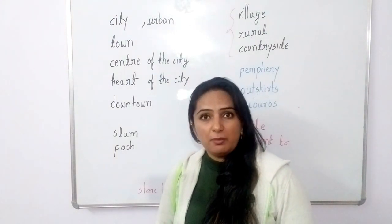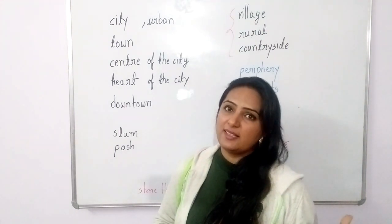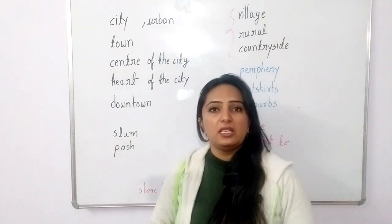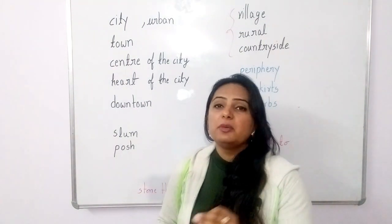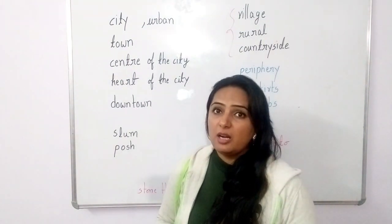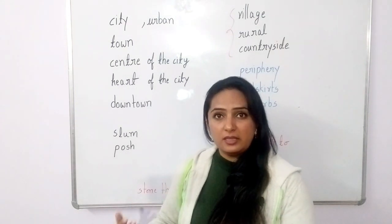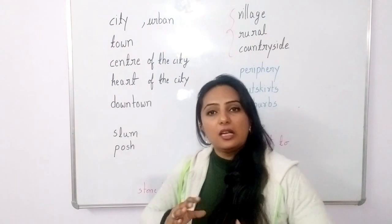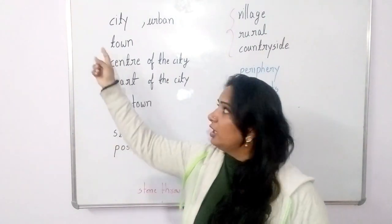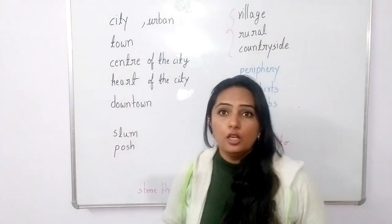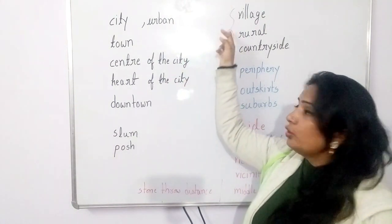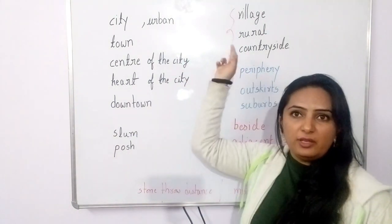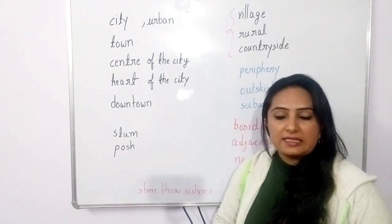You will tell that it is situated in the city or in a village. If it is a city, then you can use the words: city, urban area, and town. These three words we can use if it is in a city. If it is a village, then we call it a rural area or countryside. Village, rural, and countryside are three synonyms we can use to describe that setting.